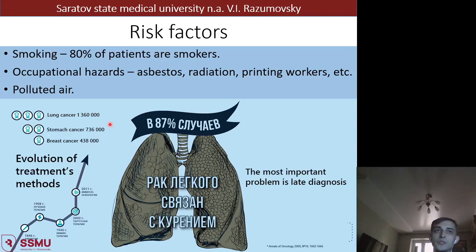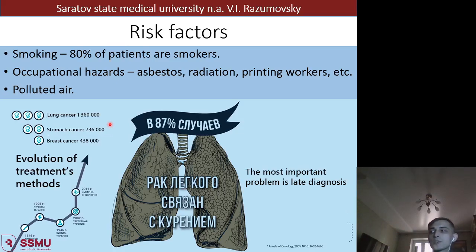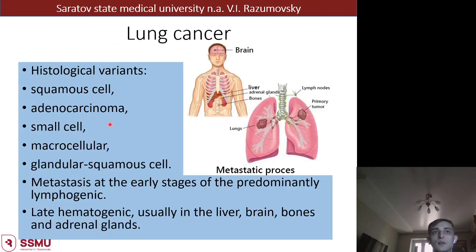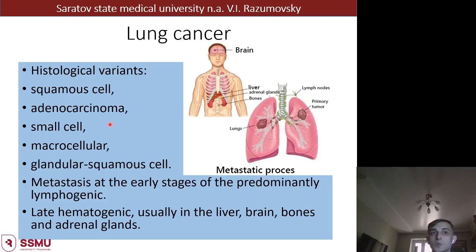Risk factors include smoking - about 80% of smokers with more than 20 years of smoking history will develop lung cancer. Occupational hazards include asbestosis, radiation, and other abnormal particles in the air. Lung cancer may be associated not only with smoking but with bad environmental conditions. Lung cancer may metastasize to the brain, liver, bones and so on. Histological variants include squamous cell cancer, adenocarcinoma, small cell cancer, large cell cancer, glandular squamous cell carcinoma, and others.